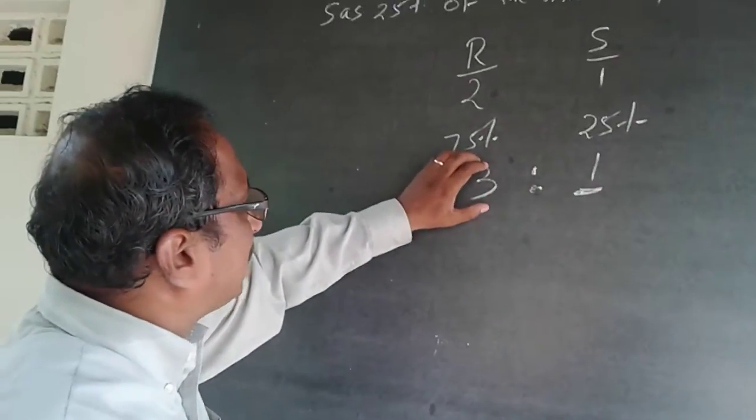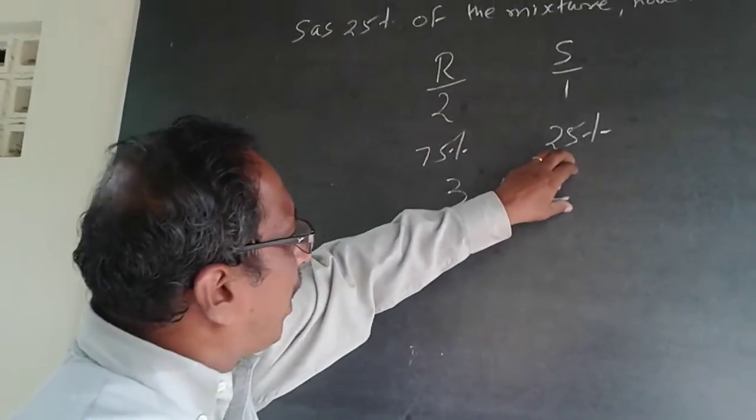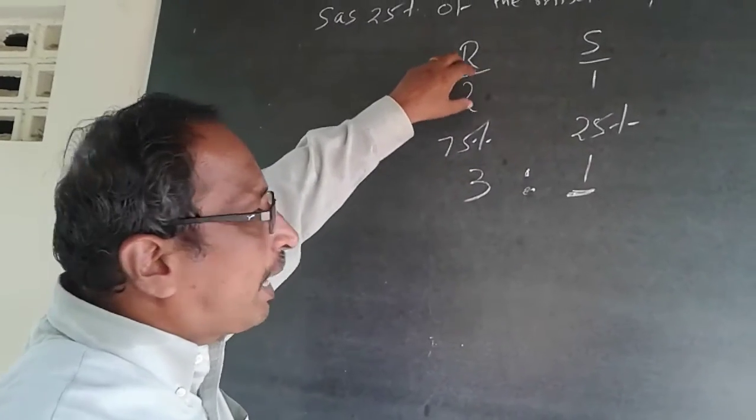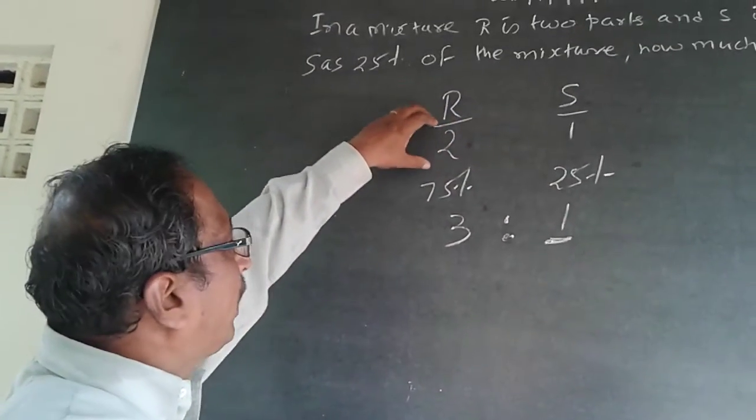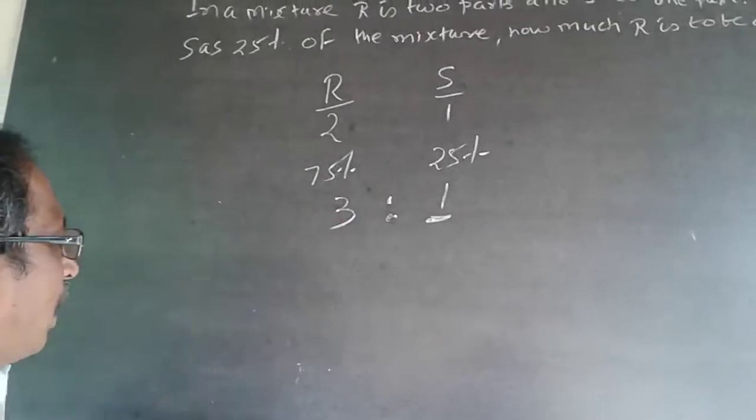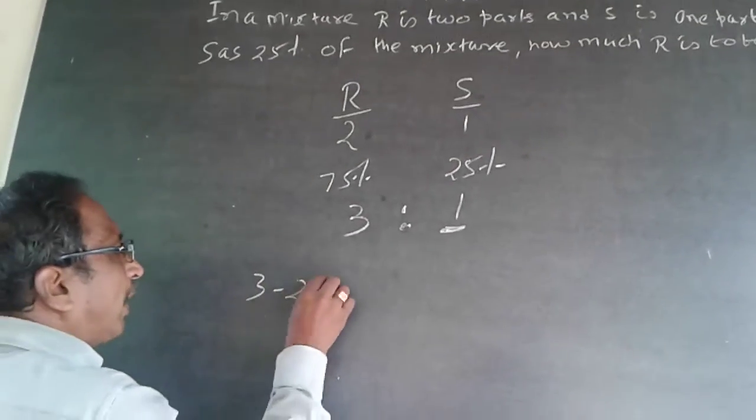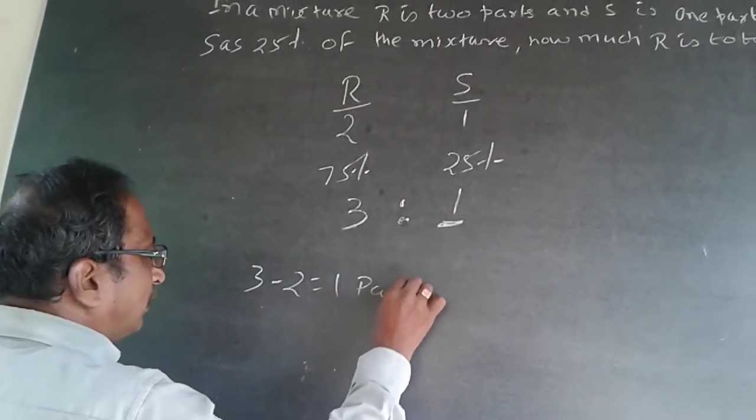Whereas what I want is 3 parts of R. For this one part, equivalent to it, I already have 2 parts. What I want is 3 parts means I want 1 additional part of R.